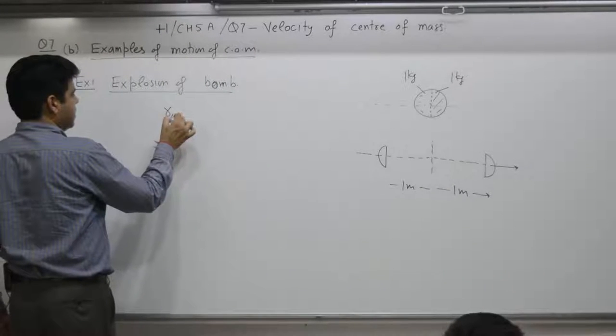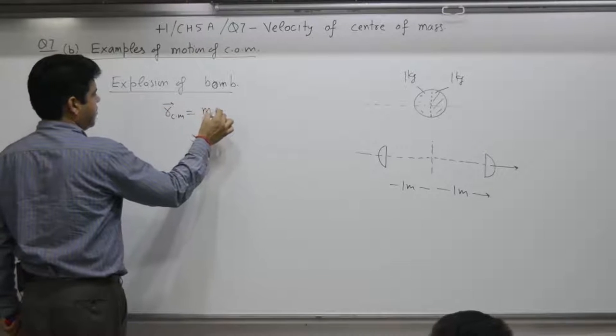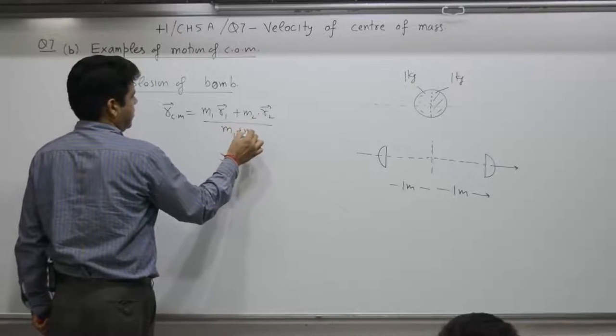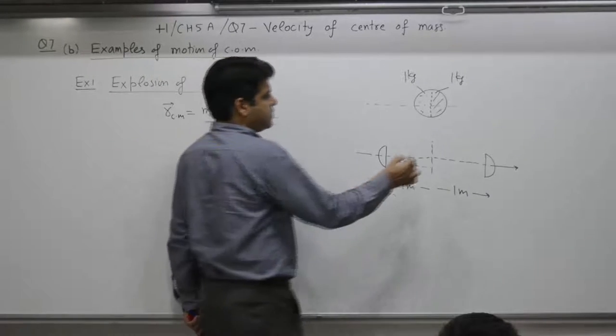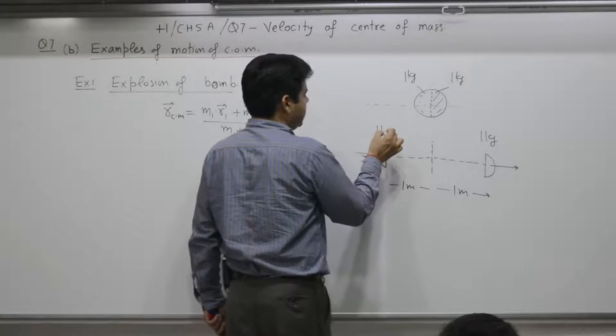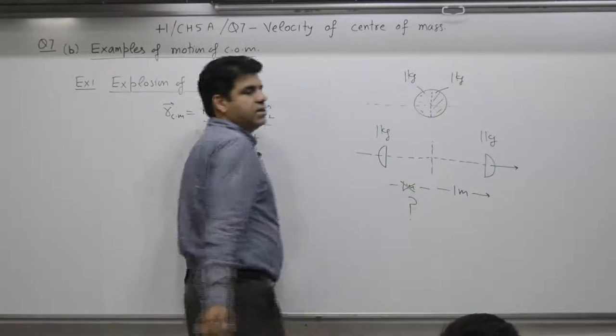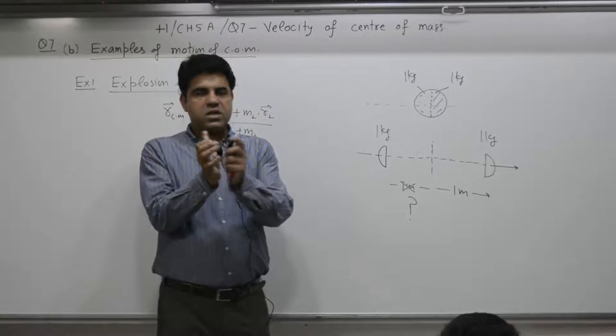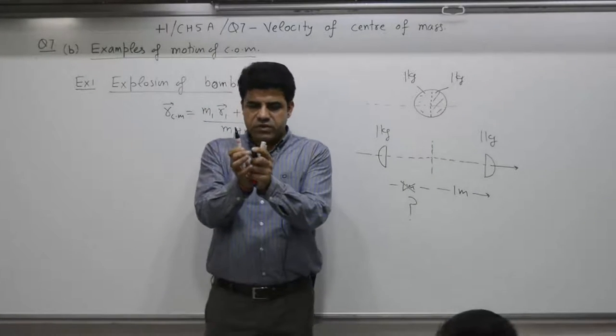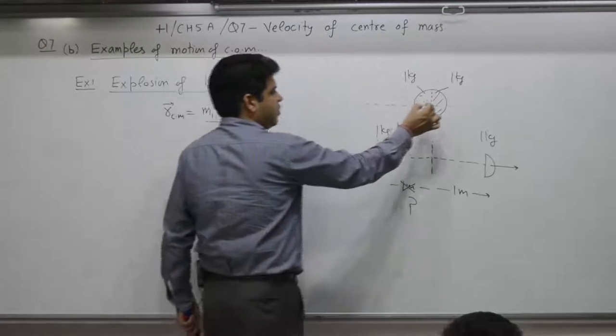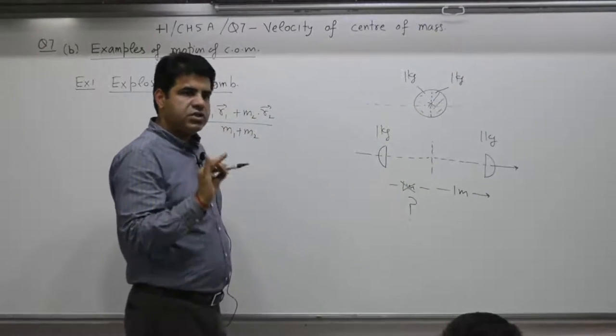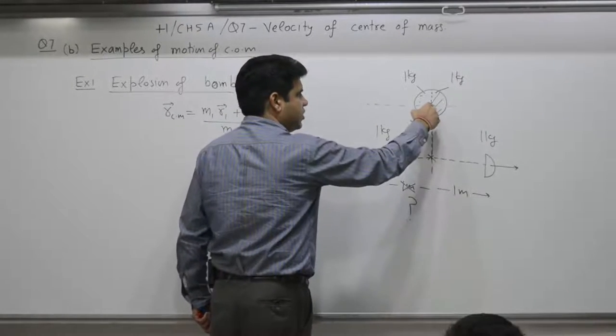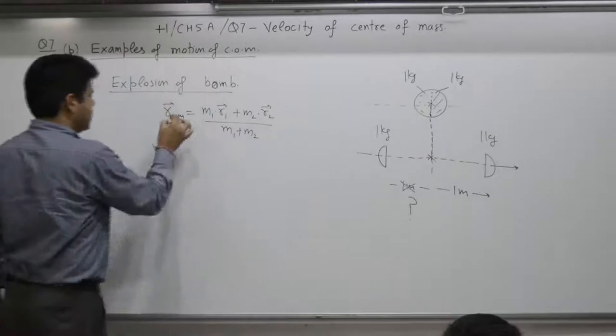R center of mass, as per definition was M1 R1 plus M2 R2 divided by M1 plus M2. Competition question is, if this 1 kg mass moves to the right, the other 1 kg mass will move by what distance? Answer is, there is no external force acting. Explosion of the bomb takes place because of internal forces. So velocity of center of mass remains constant. It is 0. If you take this point as a reference, R center of mass is 0.